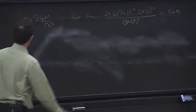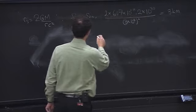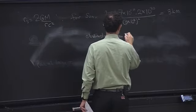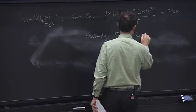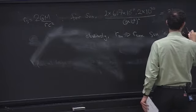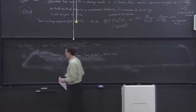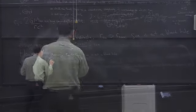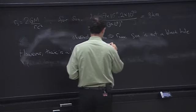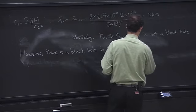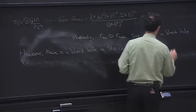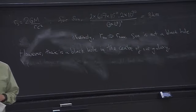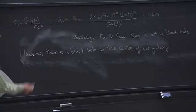What about the Milky Way? The radius of the sun is greater than its Schwarzschild radius, and the sun is not a black hole. However, there is a black hole in the center of our galaxy. Have you seen the movie of the stars around this black hole? It's online — search for 'black hole Milky Way S2'. S2 is the name of the most dramatic star in the picture. It's literally a movie of star positions in the center of our galaxy taken with a very powerful telescope.